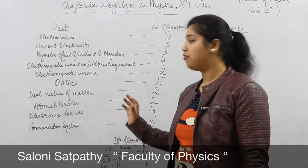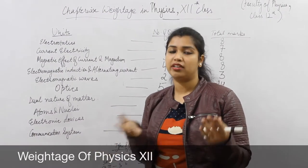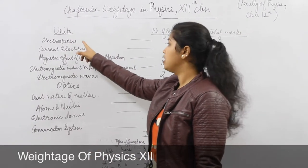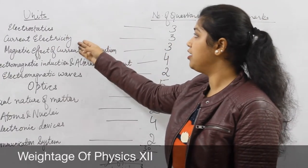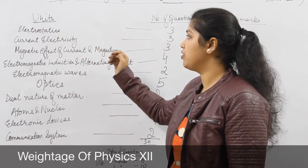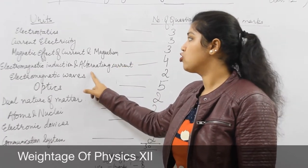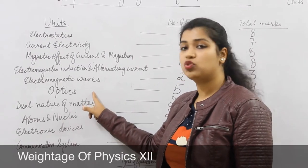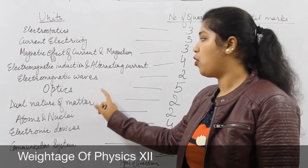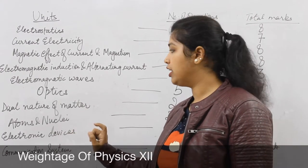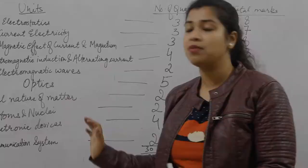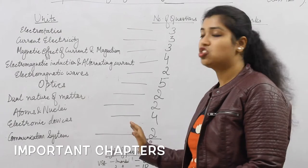In total we have these units which are divided into two volumes — volume 1 and volume 2. Going by chapter-wise division, we have electrostatics, current electricity, magnetic effect of current and magnetism, electromagnetic induction and alternating current, electromagnetic waves, optics, dual nature of matter, atoms and nuclei, electronic devices, and communication systems. These are the chapters present in 12th class and questions will be asked in CBSE from these chapters.